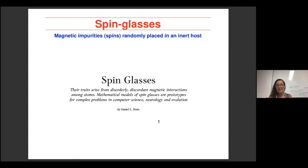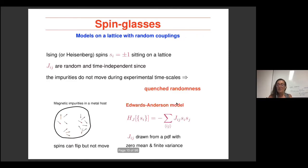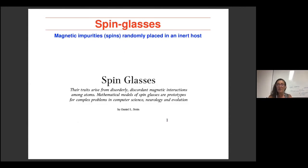Spin glasses are difficult to study. As quoted by Dan Stein: the traits arise from disorderly, discordant magnetic interactions among atoms. Mathematical models of spin glasses are prototypes for complex problems in computer science, neurology, and evolution — because Hamiltonians of these kinds appear in very different areas of mathematics, computer science, and even biology.